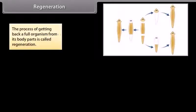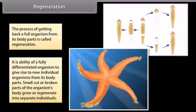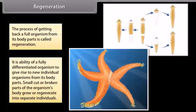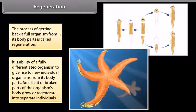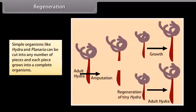The process of getting back a full organism from its body parts is called regeneration. It is the ability of a fully differentiated organism to give rise to new individual organisms from its body parts. Small cut or broken parts of the organism's body grow or regenerate into separate individuals. Simple organisms like Hydra and Planaria can be cut into any number of pieces, and each piece grows into a complete organism.